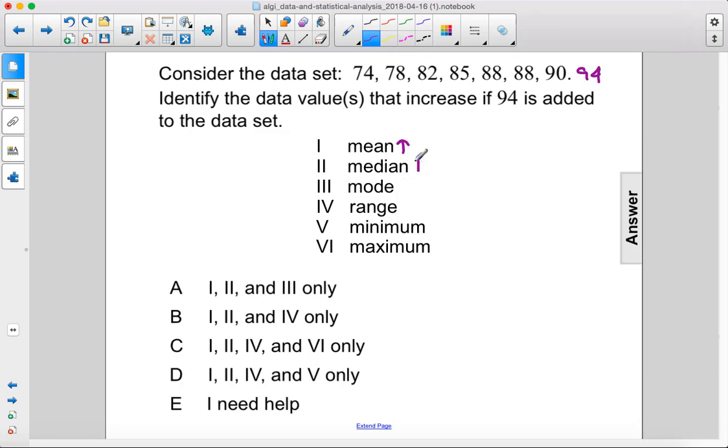The median also goes up because the median was 85, and now it's going to be the average of 85 and 88.